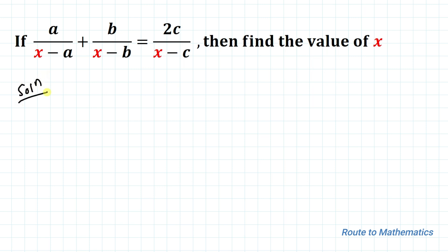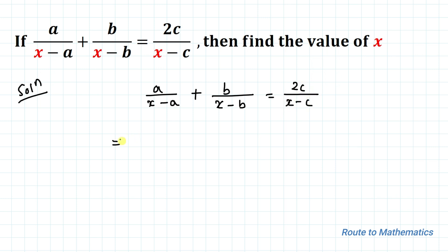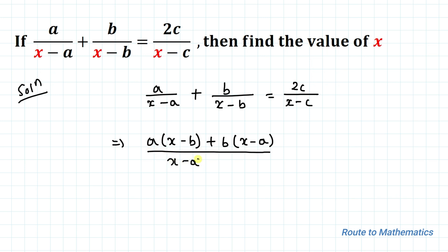So let's start the solution. We have a/(x−a) + b/(x−b) = 2c/(x−c). In the next step I will take LCM — I will multiply the denominators and do the cross multiplication in the numerator part. So we have: [a(x−b) + b(x−a)] / [(x−a)(x−b)] = 2c/(x−c).